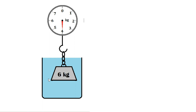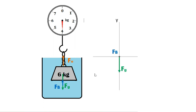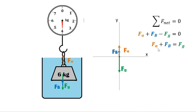If we suspend our object into the water, since there is a buoyant force, we have the weight of the object and the buoyant force. Therefore, the force exerted by the scale is much lesser. In the free body diagram, we have the weight of the object, the buoyant force going up, and the force exerted by the scale. Adding them up: the force applied by the weighing scale plus the buoyant force is just equal to the weight of the object suspended in air.